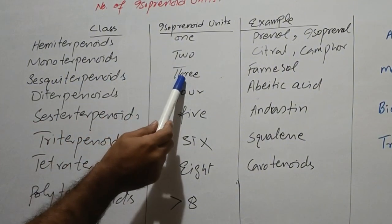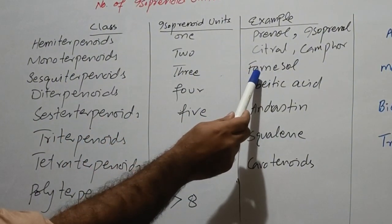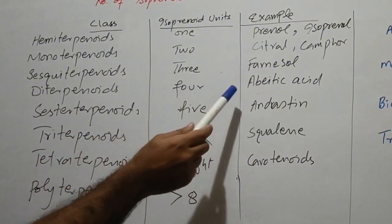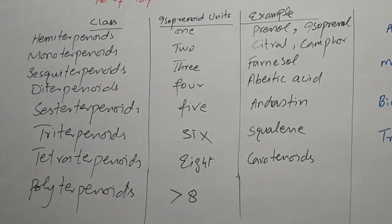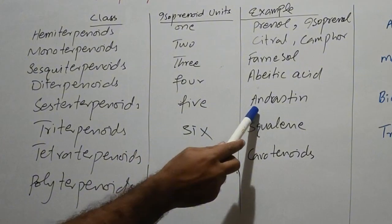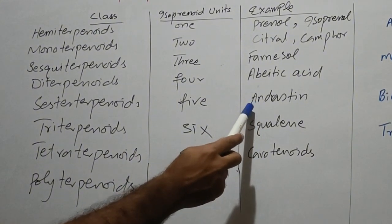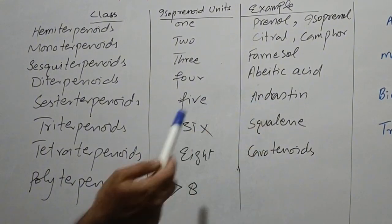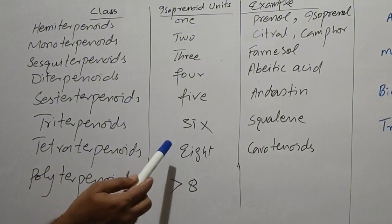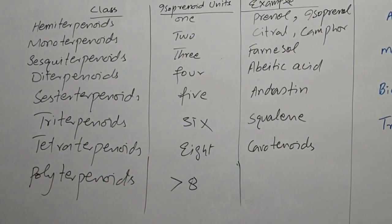Sesquiterpenoids contain three and they include farnesol. Diterpenoids contain four and their example is abetic acid. Sesterterpenoids contain five isoprenoid unit and the terpenoid includes in this class is andrastin. Triterpenoids, these contain six isoprenoid unit and the example is squalene.